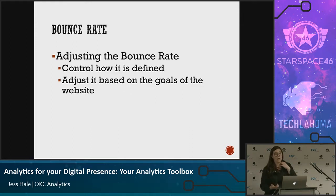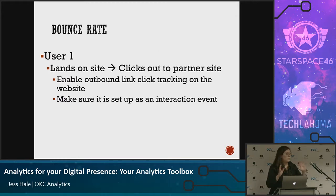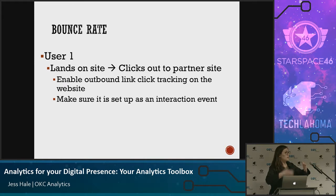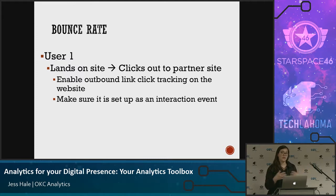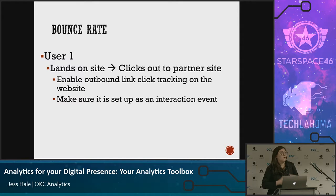You can actually adjust your bounce rate — you can control how it's defined and adjust it based on your website's goals. Say a user lands on the site and clicks out to a partner site. You track this by enabling outbound link click tracking. You set up click tracking so that if somebody clicks a link that isn't within your website, it fires off an event into Google Analytics. Google will count that hit towards time, so they won't be counted as a bounce. You do have to make sure it's set up as an interaction event. Our next speaker, Terry — who I'm actually married to — is a developer, and he'll walk through a live demo of how to set some of these things up at the next meeting.